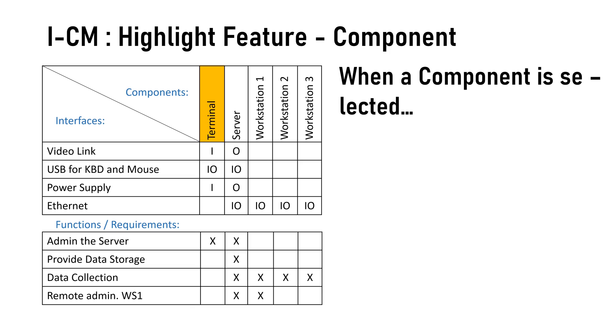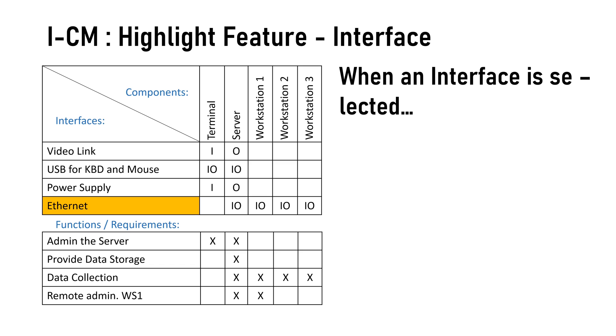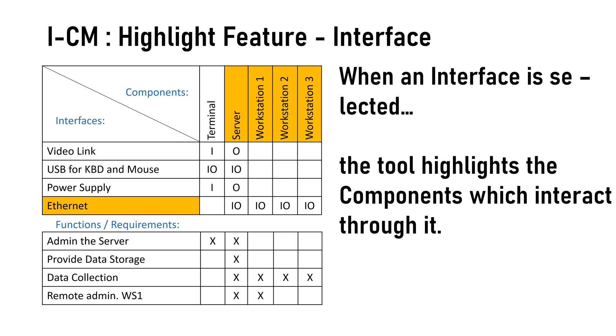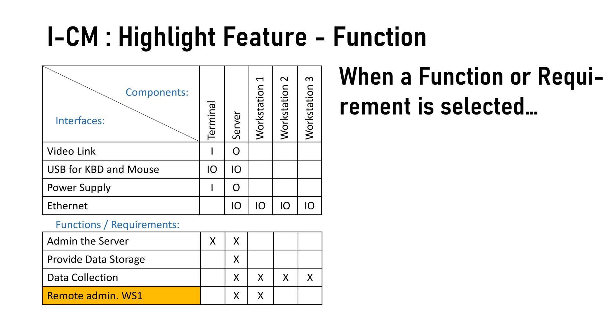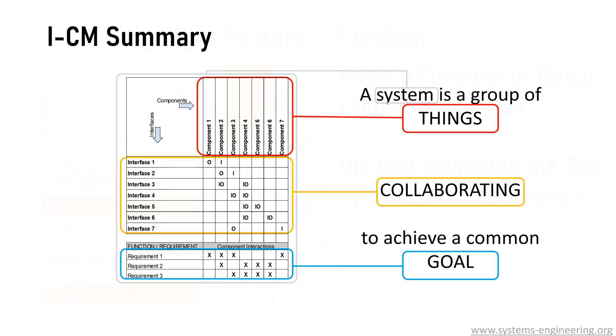When we select a component, the tool is going to highlight all the interactions of that component with the rest of the system. It will also highlight all the functions which are directly dependent on that component. When an interface is selected, the tool will highlight all components which interact through it. And when we select a function or requirement, the tool will highlight the complete subsystem which delivers it. The instant highlight feature of the ICM tool is great to explore and analyze the structure and the dependencies in the system. The next case study will demonstrate how to use ICM in one more practical and less boring exercise.